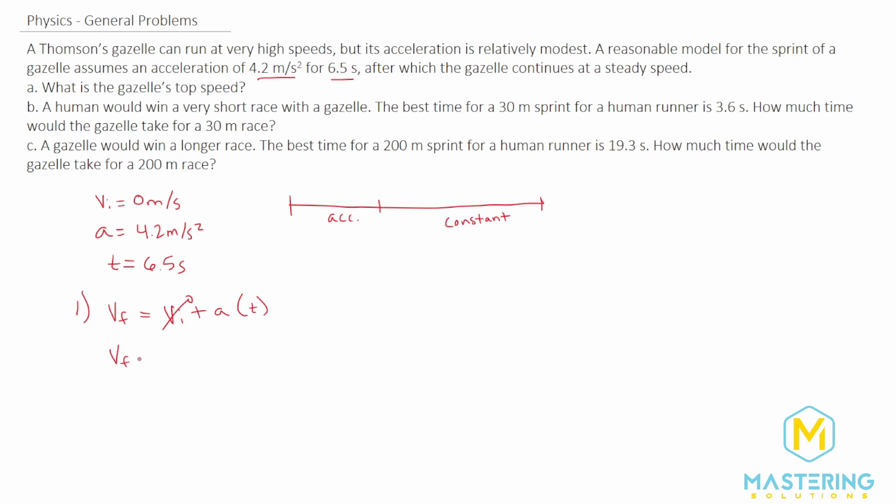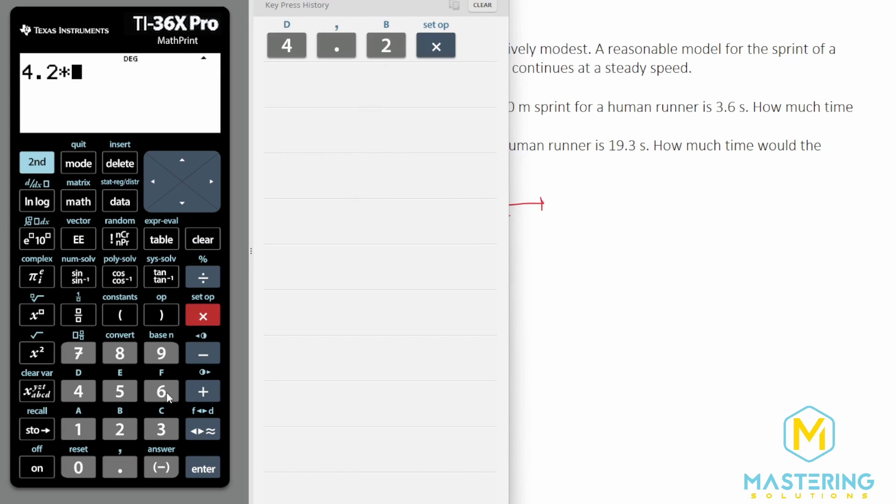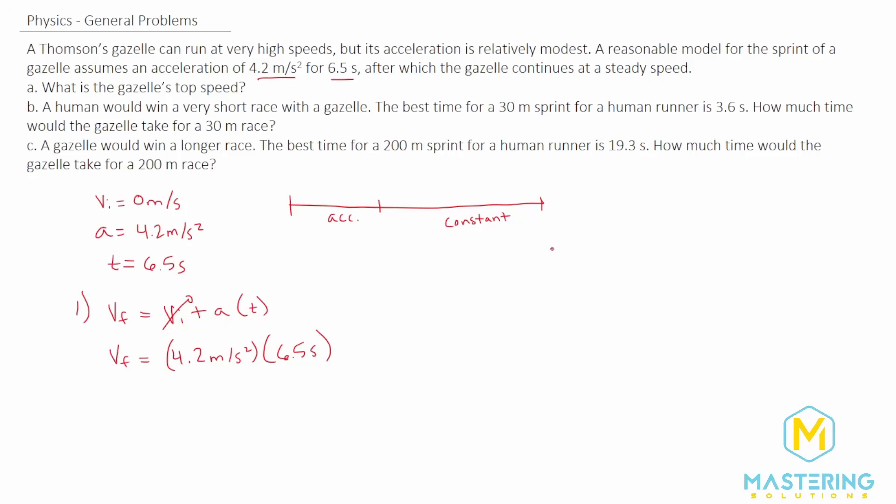So v final or its top speed is the acceleration 4.2 meters per second squared times the time 6.5 seconds. 4.2 times six and a half seconds is 27.3 so we'll round that down to 27. So 27 meters per second is the top speed for the Thompson's gazelle.